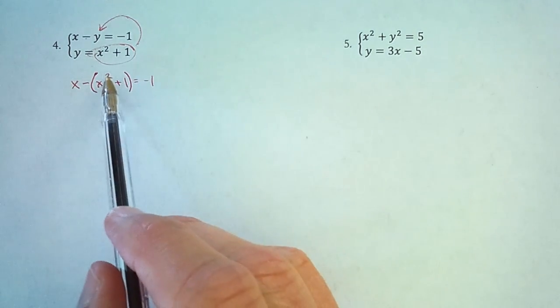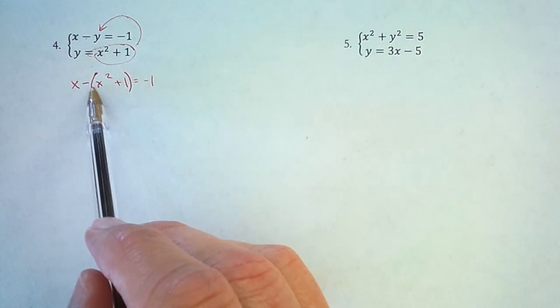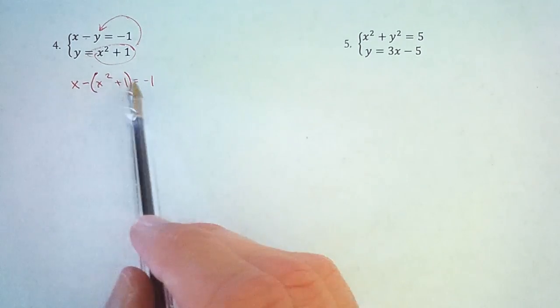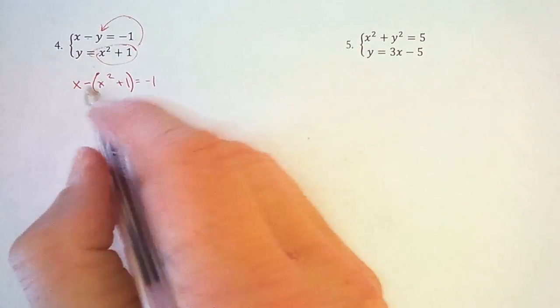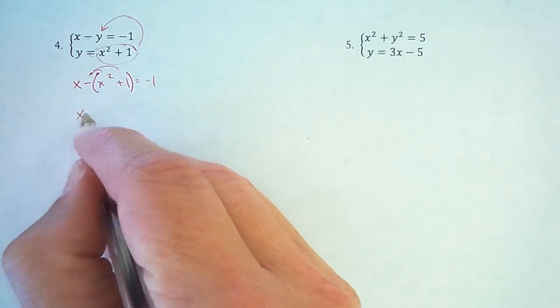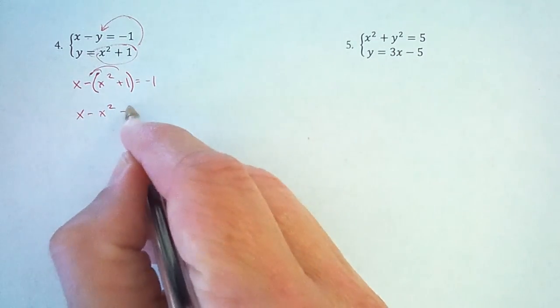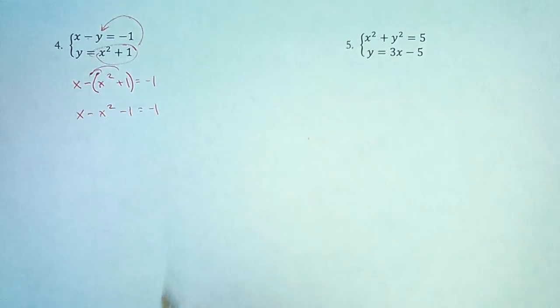Now when I have an x squared and an x, the first thing I need to do is distribute this negative, but then I want to collect everything to one side. So when I distribute that negative, I get x minus x squared minus 1 equals negative 1.